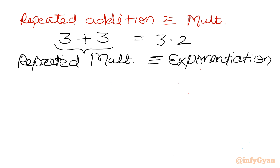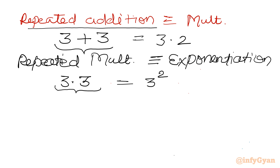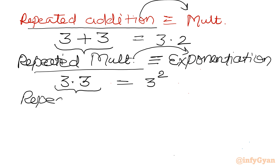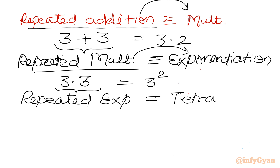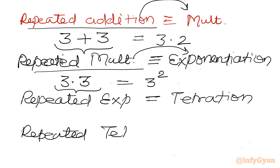For example, 3 times 3 — we are multiplying 3 two times, so that is 3 to the power 2. So: repeated addition is multiplication, repeated multiplication is exponentiation, repeated exponentiation is tetration, and repeated tetration is pentation.